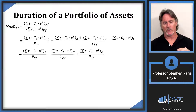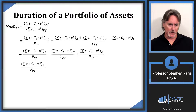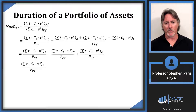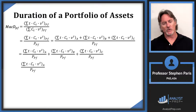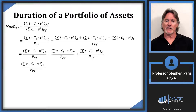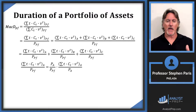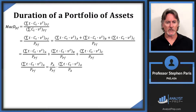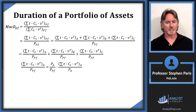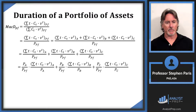Looking at the first term — the numerator expression for bond A divided by the price of the portfolio — I'll use a little trick: I multiply and divide by the price of bond A. The two P_A terms cancel, so the ratio is unchanged, but the expression is rewritten in a more revealing form. I can apply the same trick to the other two terms.